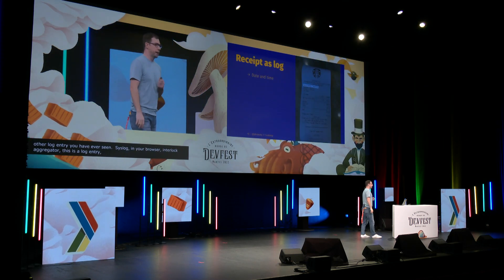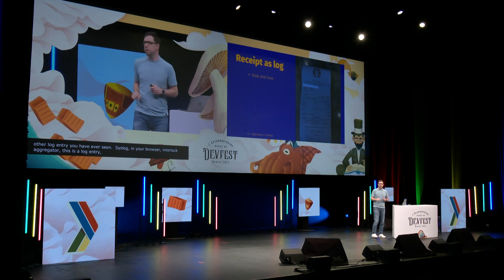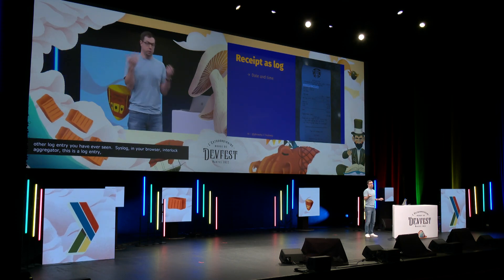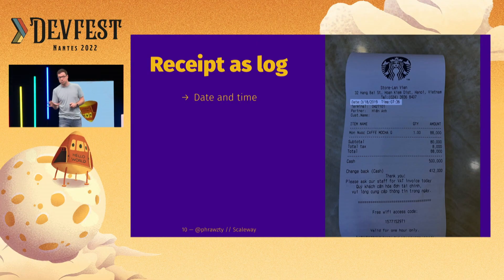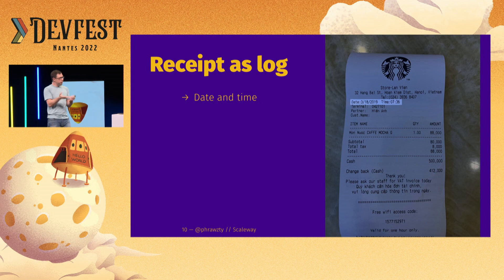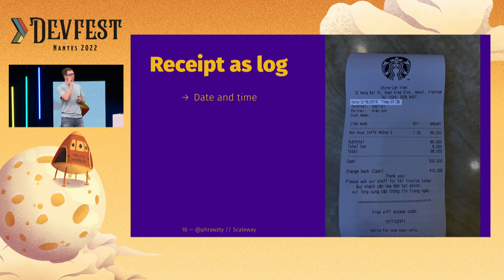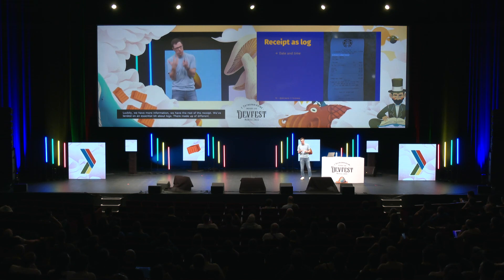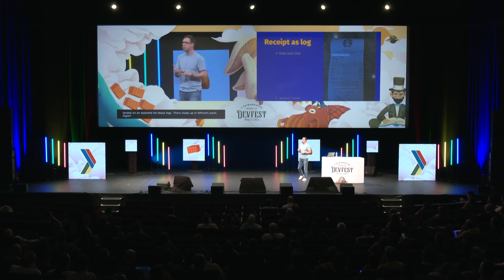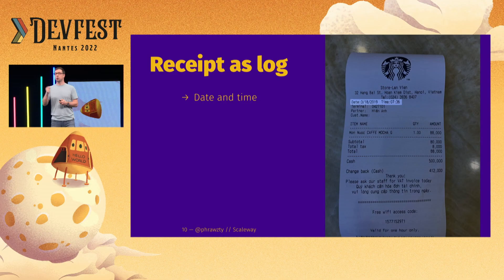We'll start with the date and time. If this was the only piece of information we had, it wouldn't be that useful — we need more information. Luckily we have the rest of the receipt. So right away we've landed on an essential bit of information about logs: they're made up of different parts, and all those parts have to be considered together in order to understand what the log message is trying to tell us. Keep that in your mind as we go forward.